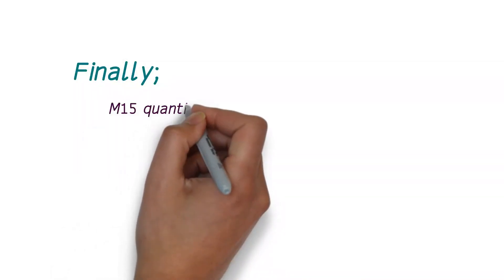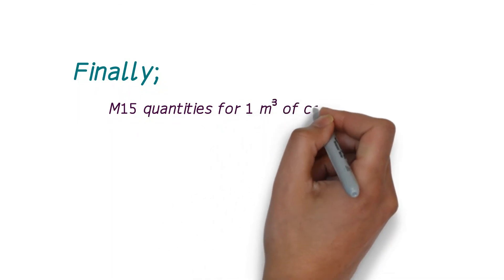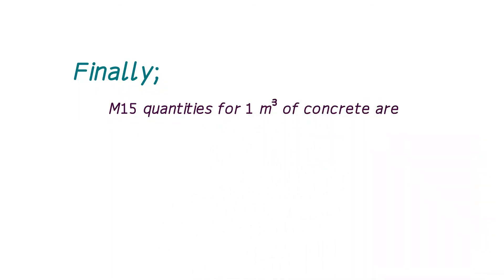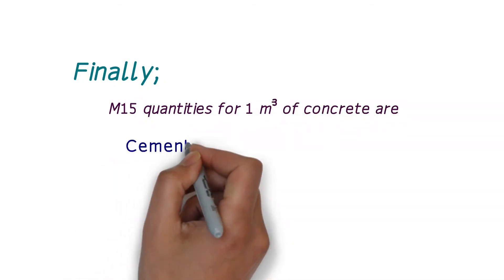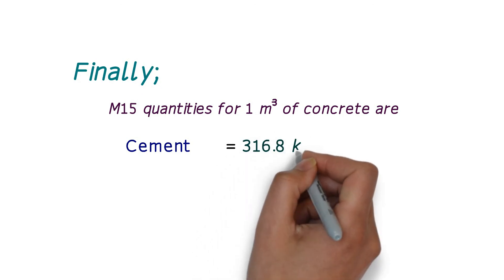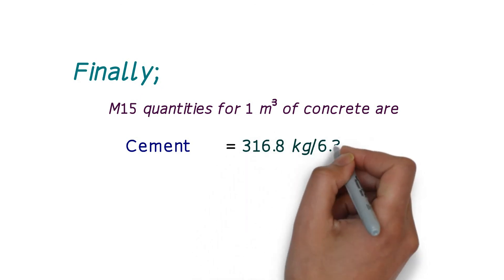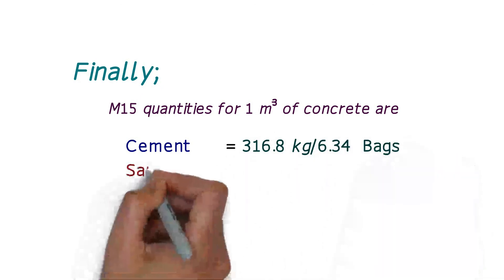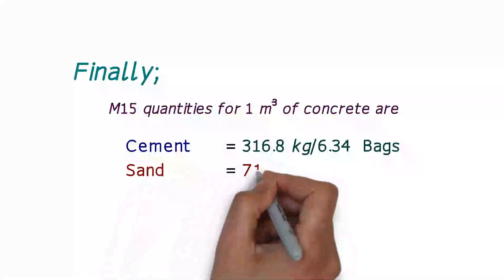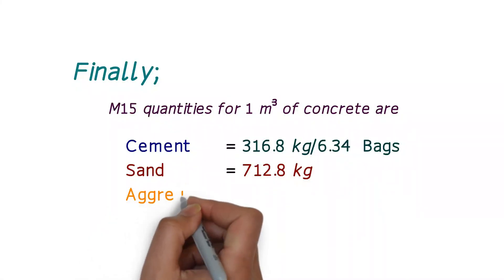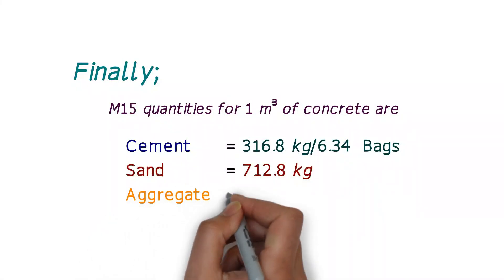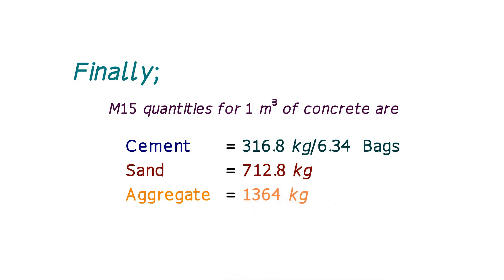The final quantities for M15 grade concrete are: cement equals 316.80 kg or 6.34 bags, sand equals 712.88 kg, and aggregate equals 1364 kg.